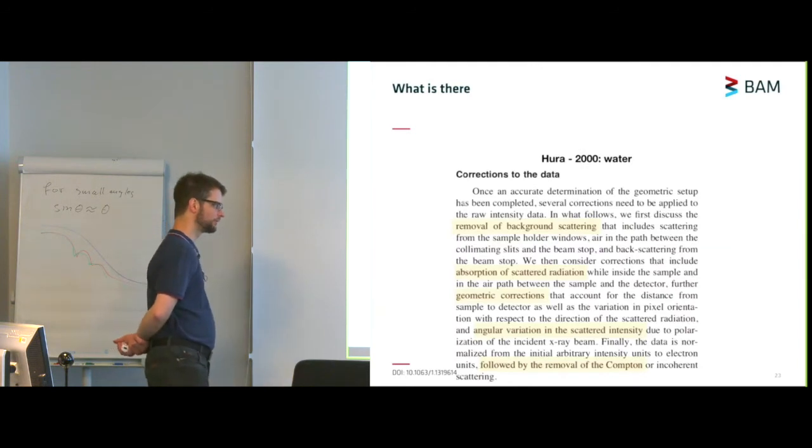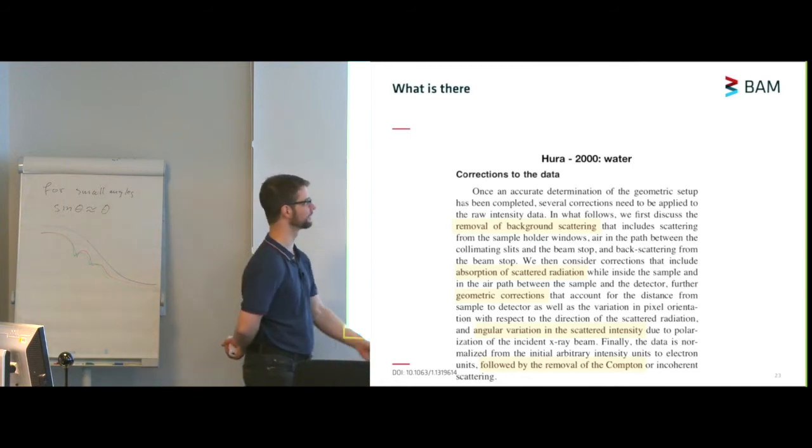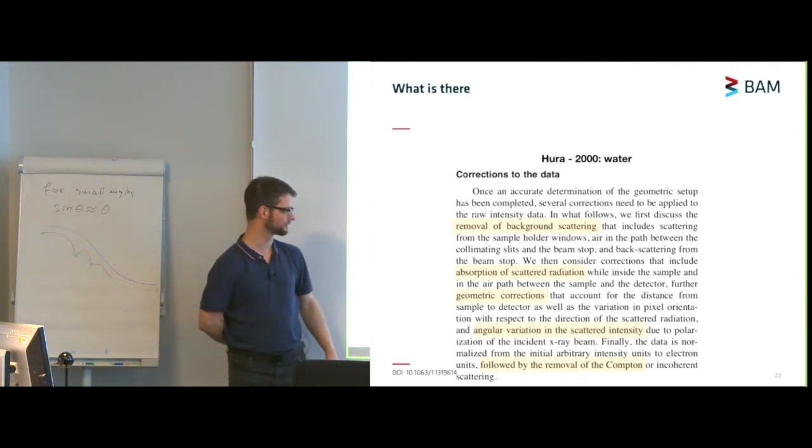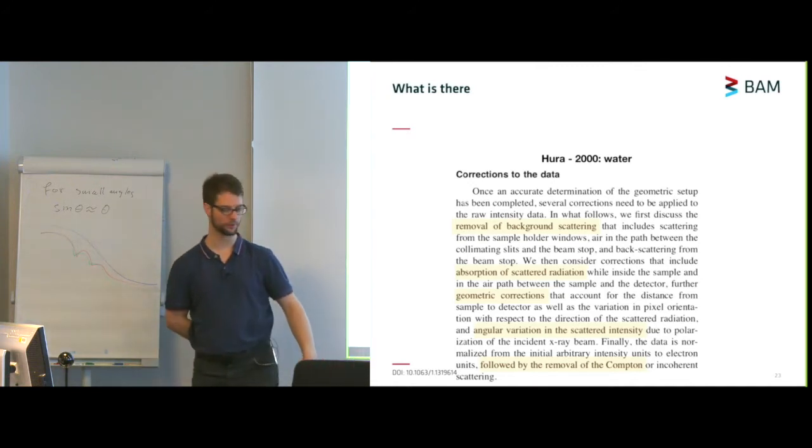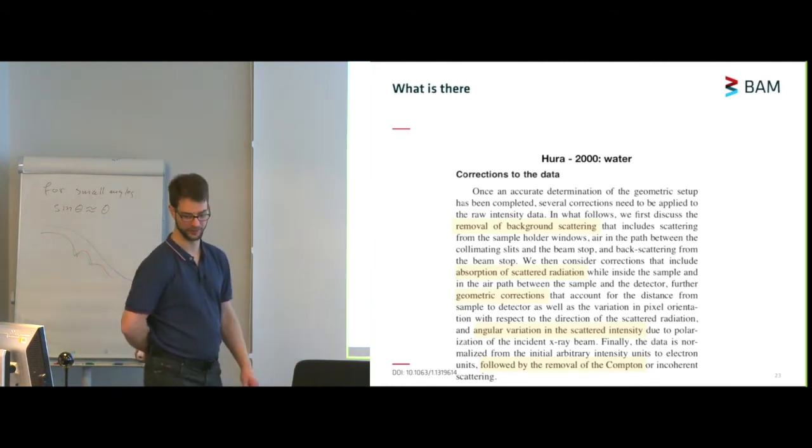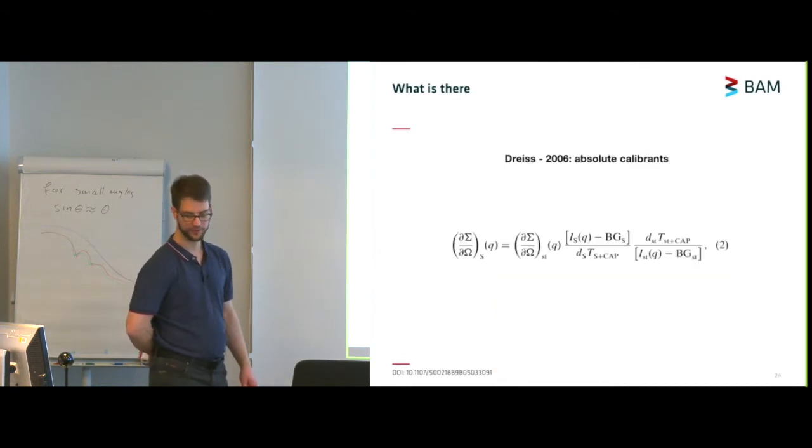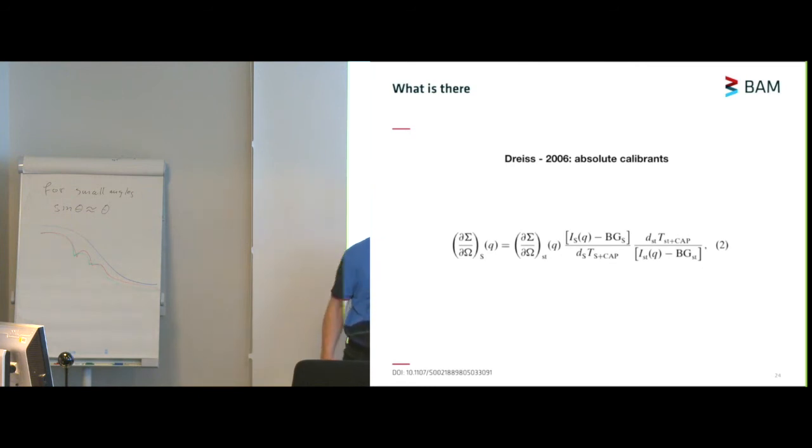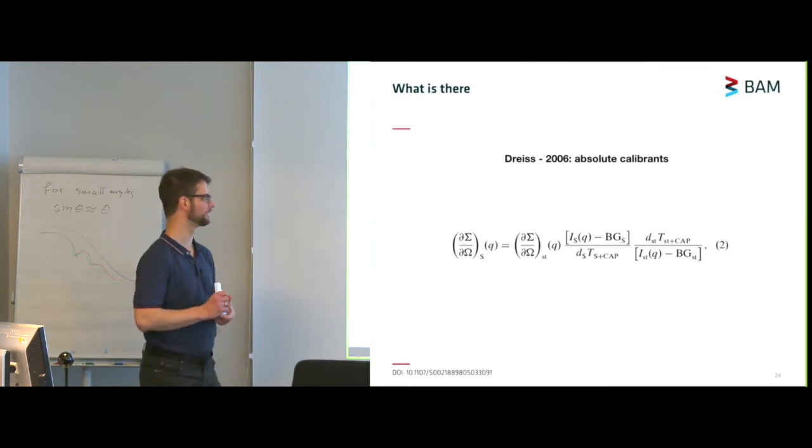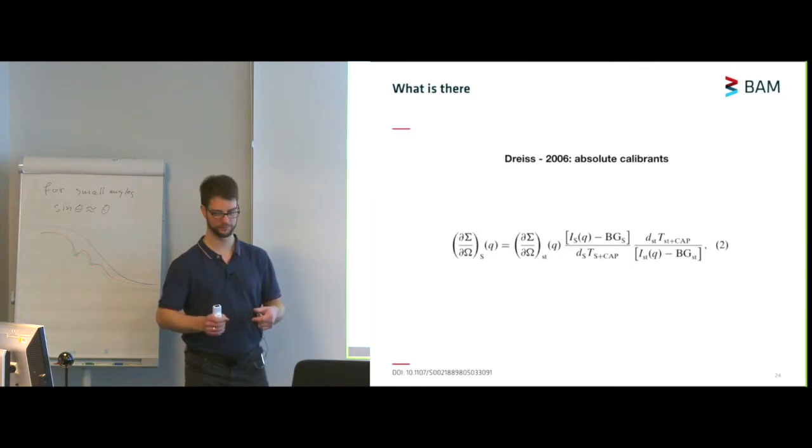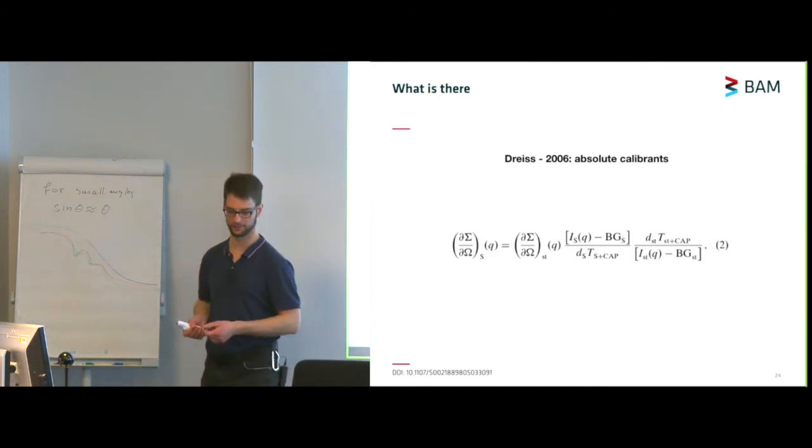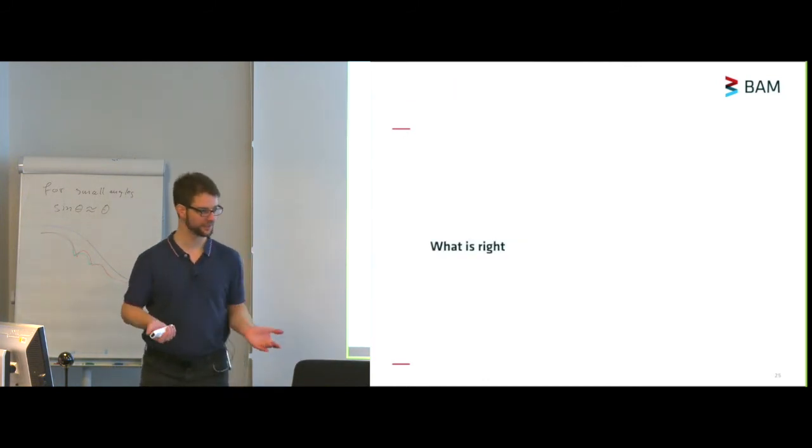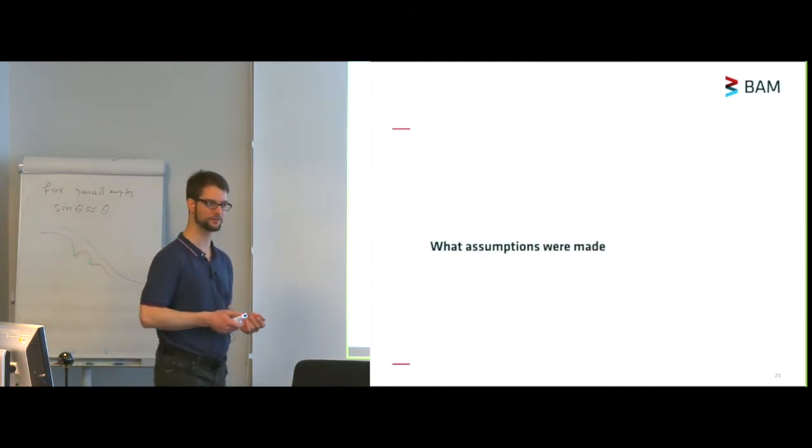There are, however, also examples of people who have done it very, very diligently, taking care of a lot of different effects, such as not just background scattering, but also absorption correction, geometric corrections, angular variation, self-absorption correction, followed by removal of the Compton or incoherent scattering, which is a very complete way of subtracting this. One fairly complete example is from Drice in 2006 who published an equation for doing background subtractions and correcting for things like the thickness of your sample and the transmission factors, which, combined with an absolute scaling factor, should get you to absolute units. So, a lot of different things, lots of different possible ways of doing your data corrections. So, which one of these are right, which one is right for you, that depends on which assumptions were made for each one of these options.